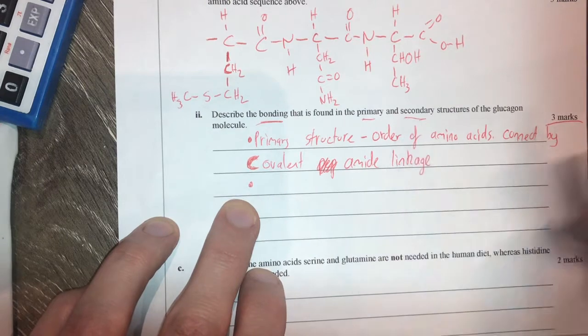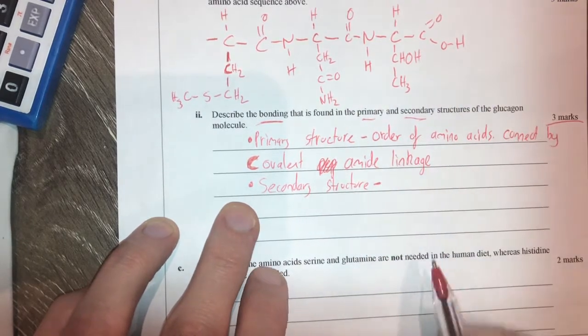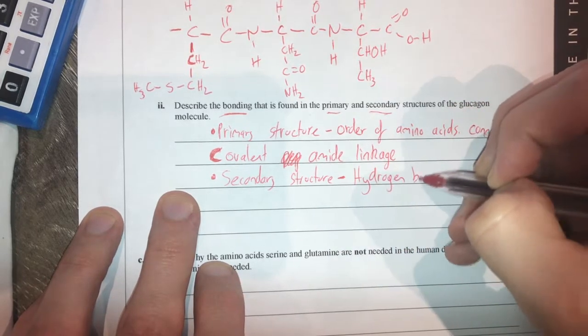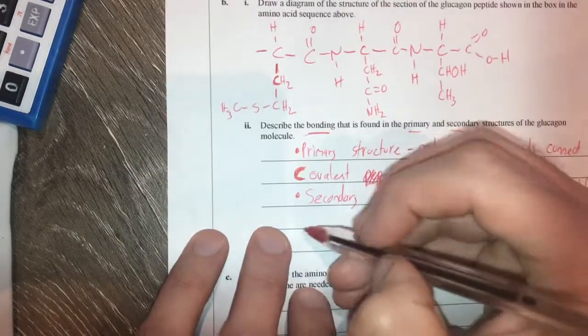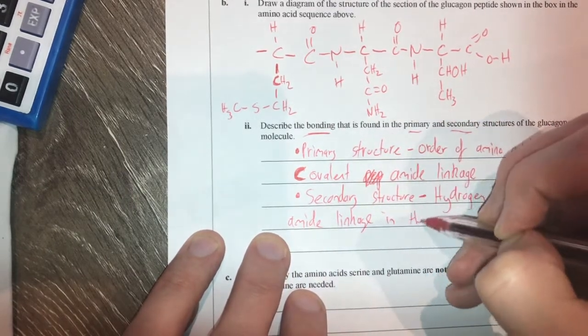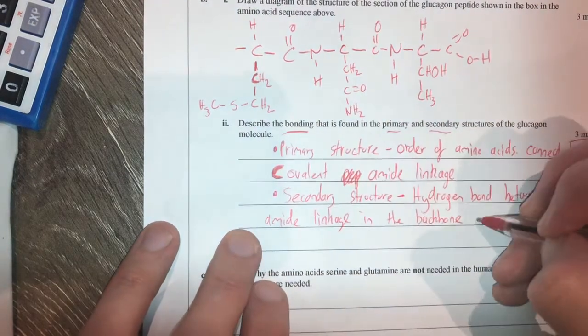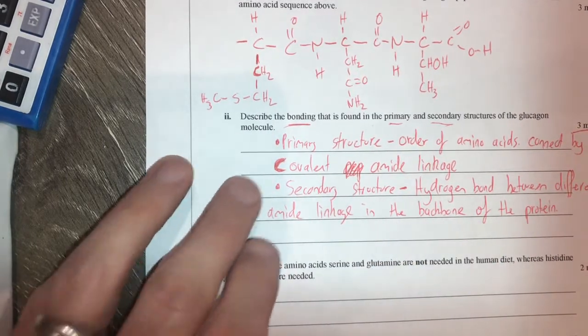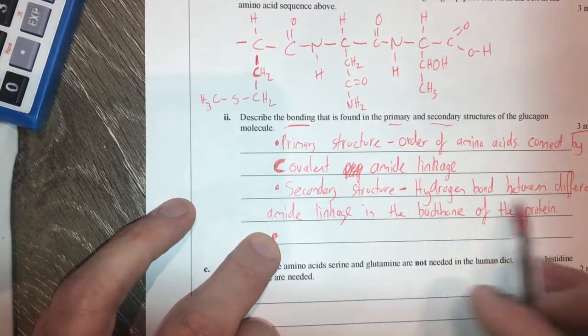My second dot point is my secondary structure. Alright, now this is formed from hydrogen bonding. Hydrogen bonding between different amide linkages in the backbone - probably backbone's not the best word for it, but you get the idea, the backbone of the protein. That's my two things there. I've only really got two points there, so I'm going to try and work out the third one, and with the secondary structure, I'm going to try and explain this a bit better.